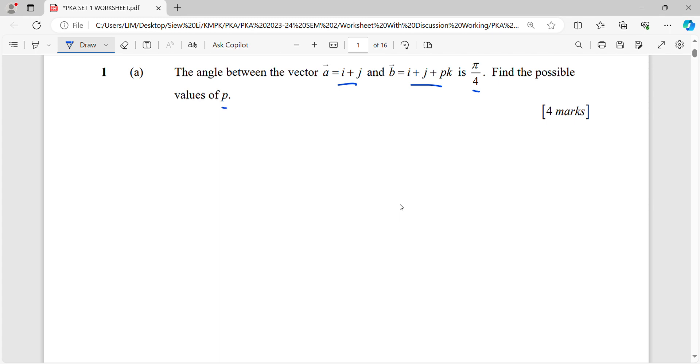So angle between two vectors, formula cos theta equals to a dot b over magnitude a, magnitude b.